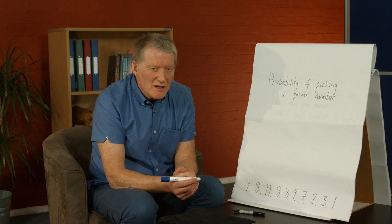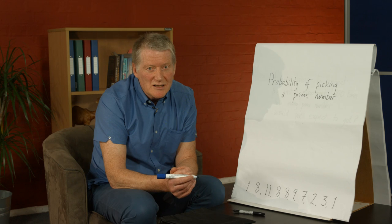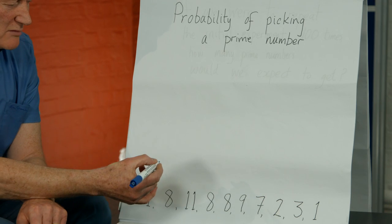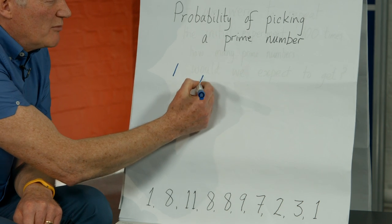Prime numbers are numbers that have exactly two distinct factors. So let's look at some of these numbers. There's the number 1. Is that a prime number?